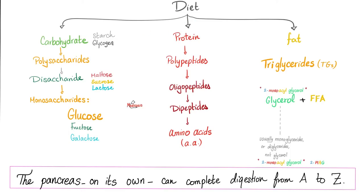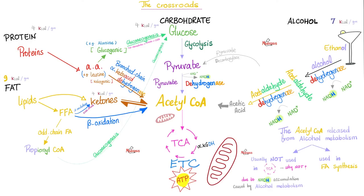Your diet is either carbohydrates, proteins, or fat. When you digest carbohydrates, you get monosaccharides like glucose. By glycolysis, glucose becomes pyruvate, and then pyruvate becomes acetyl-CoA by pyruvate dehydrogenase. This is the enzyme that is lacking in today's discussion. If I cannot go from pyruvate to acetyl-CoA, I cannot enter into the Krebs cycle, and I cannot go to the electron transport chain.